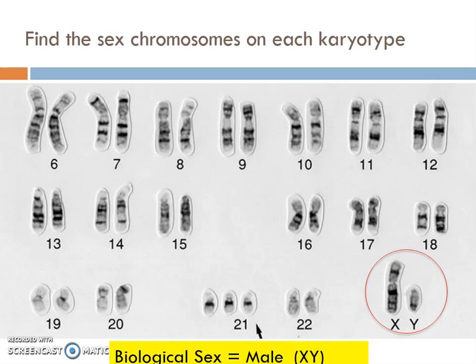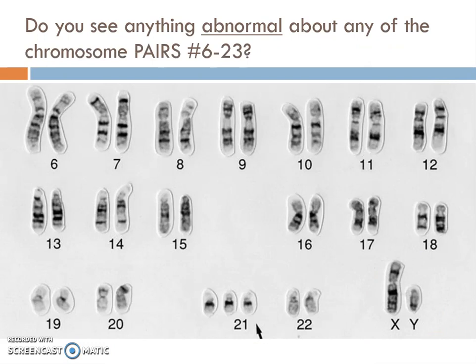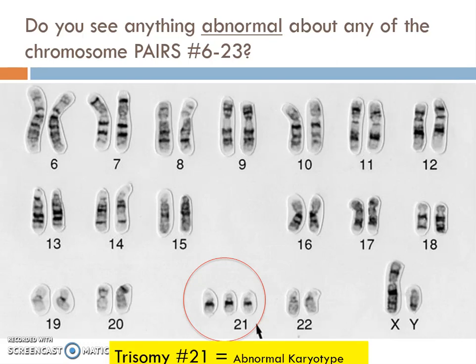The last step is to check whether anything is seemingly abnormal in any of the sets 6 through 23. When I get to 21, I count three chromosomes — but remember these are homologous pairs, meaning just two. That triplet amount is called trisomy, so we call this trisomy 21: three chromosome 21s. This is an example of an abnormal karyotype. Scientists look under the microscope for any extra or missing chromosomes on any of these pairings.